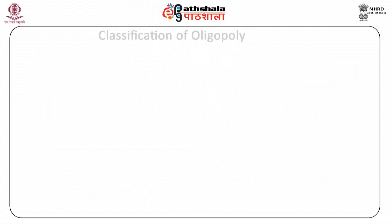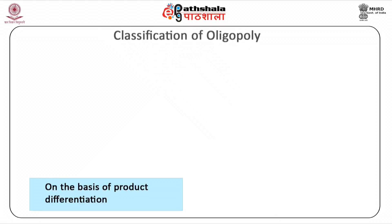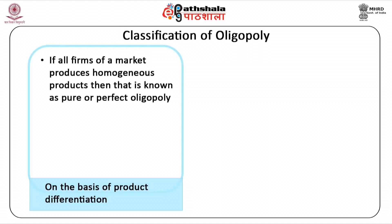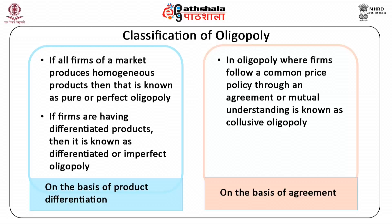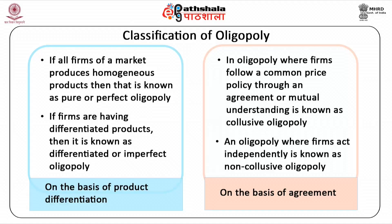Let us understand the classification of oligopoly. First, on the basis of product differentiation: if all the firms in a market produce homogeneous products, that is known as pure or perfect oligopoly; if firms have differentiated products, it is known as differentiated or imperfect oligopoly. Second, on the basis of agreement: oligopoly where firms follow a common price policy through an agreement or mutual understanding is known as collusive oligopoly, and oligopoly where firms act independently is known as non-collusive oligopoly.